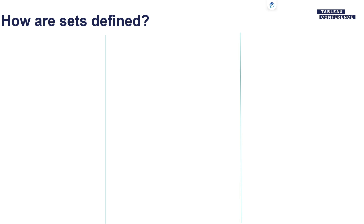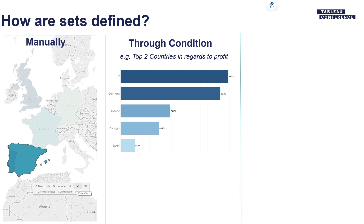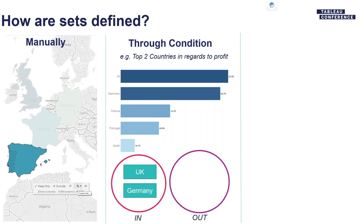So how do we know what's in and what's out? There are three ways. The first is just manually — as someone playing with the data, you can select marks and create a set from them. The second is based on a condition: for example, if we look at our top five countries, two of them are the top two in terms of profit, so only countries that fill that criteria will be in, everything else will be out.